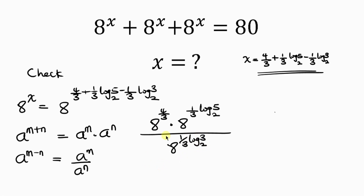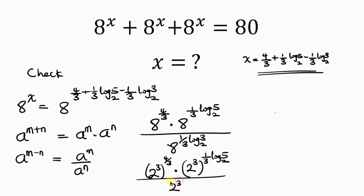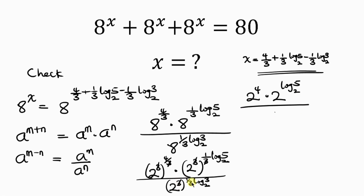Now simplify further. Notice that 8 is the same as 2 to the 3. So we have 2 to the 3, raised to the 4 over 3, times 2 to the 3 raised to the 1 over 3 log 5 base 2, all over 2 to the 3 raised to the 1 over 3 log 3 base 2. Multiplying the powers, this 3 cancels out this 3, giving 2 to the 4. This 3 cancels out this 3, giving 2 to the log 5 base 2. And in the denominator, this 3 cancels out this 3, giving 2 to the log 3 base 2.